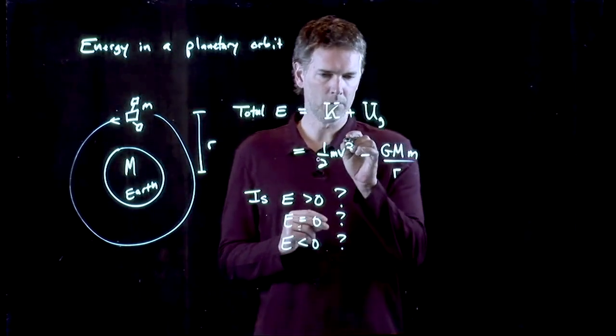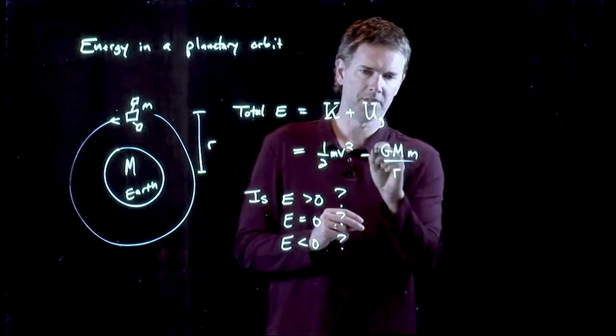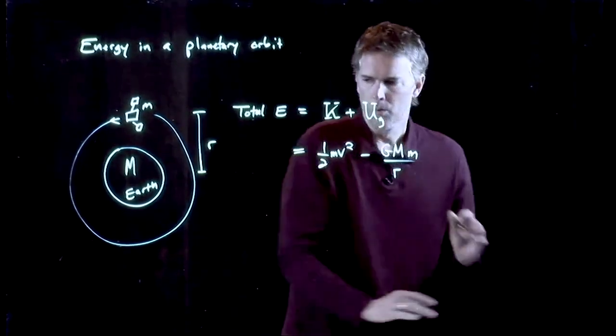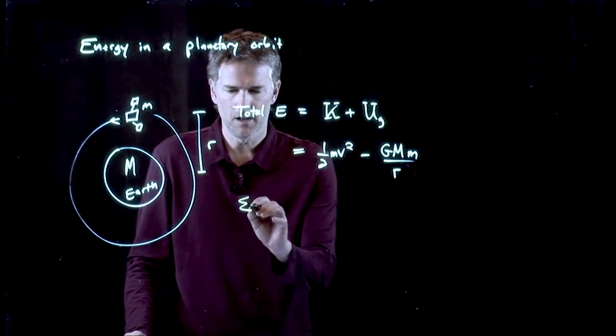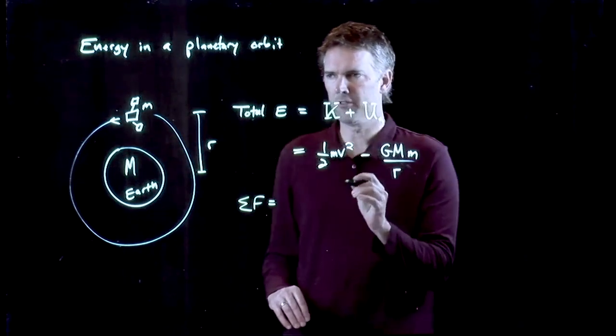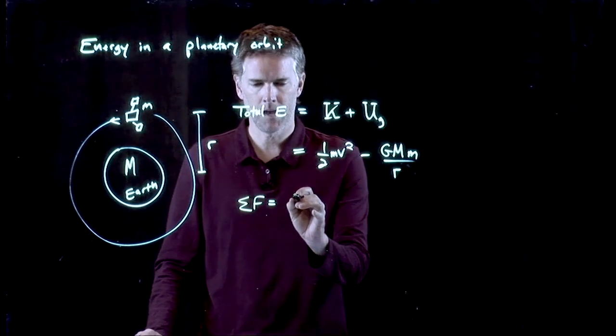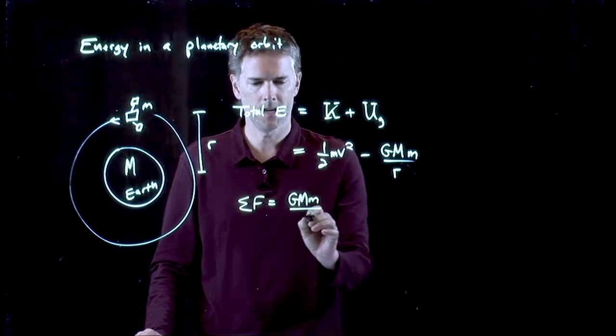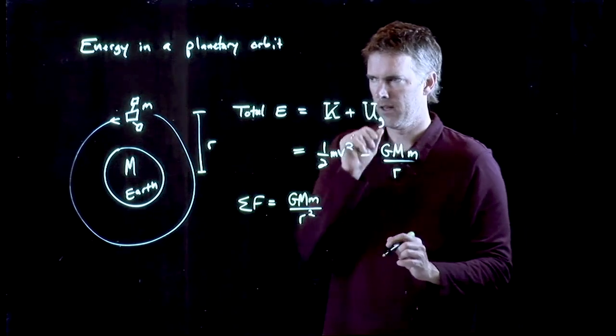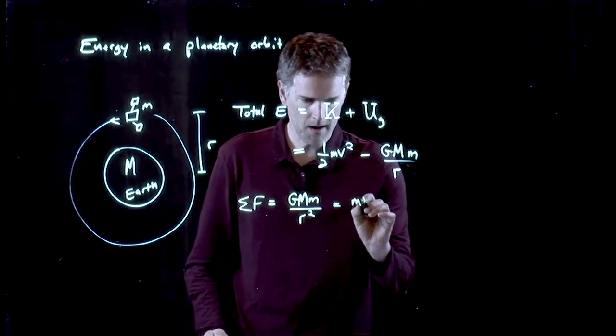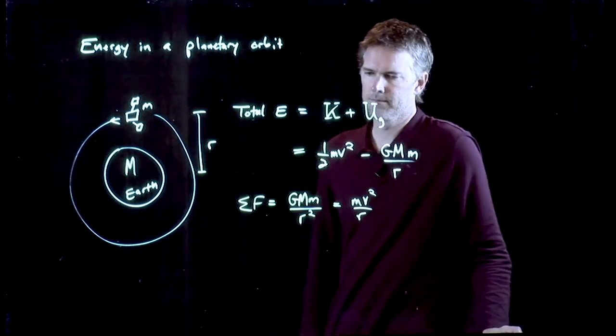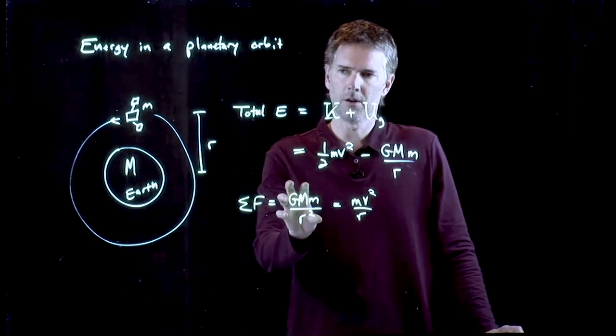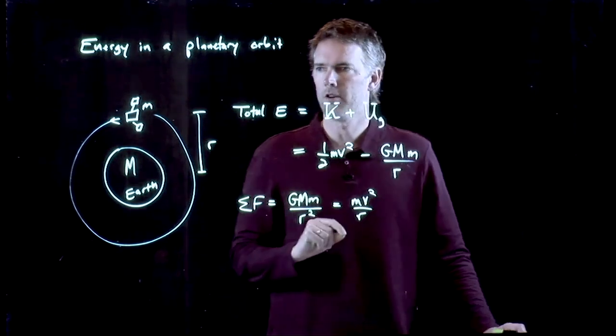What we can do is we can relate this V to some of this stuff over here. How do we do that? Well, what we remember is that if it's moving in a circle, the sum of the forces have to add up to MV squared over R. And there's only one force here. It's G, mass of the Earth, mass of the satellite, divided by R squared. That equals MV squared over R. And so it looks like I can relate this MV squared stuff to these other parameters. Which maybe we can solve this and plug it back into there.